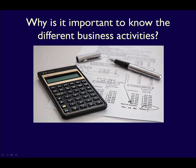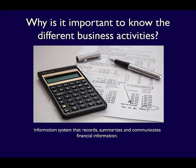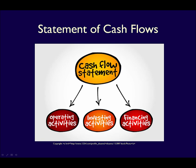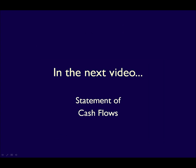Why is knowing about the different business activities so important? Accounting is an information system that provides financial information, but that information is useful only if those using it can understand it. Many stakeholders believe that cash is king in any business, meaning that cash flow is critical to evaluating the financial health of any business. The statement of cash flows is particularly useful for predicting how much cash will be available in the future to repay debt or pay dividends, and that statement is divided into the three business activities: financing, investing, and operating. By understanding the different types of activities, you can tie that understanding into the structure of the statement of cash flows, which is the subject of our next video.